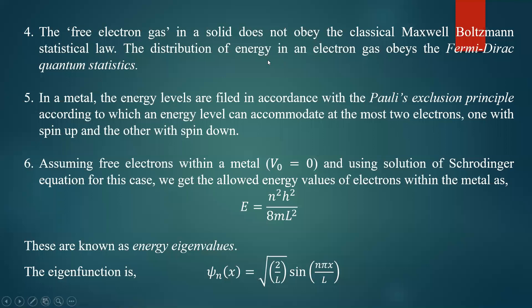The fourth point: electrons are distributed in accordance with Fermi-Dirac quantum statistics, and the Fermi-Dirac distribution function is used to study the distribution of electrons. The fifth point: electrons obey the Pauli exclusion principle — no two electrons can have the same set of quantum numbers, so each energy level can accommodate only two electrons, one with spin up and one with spin down.